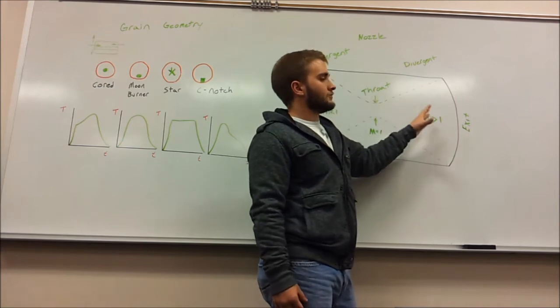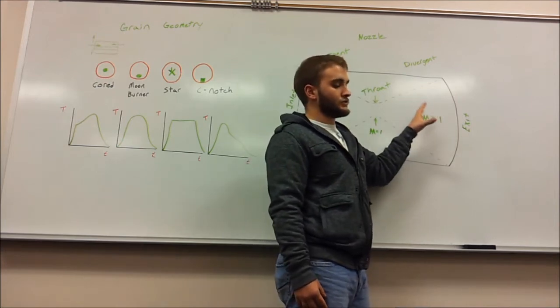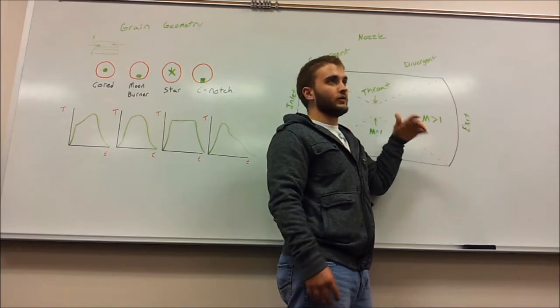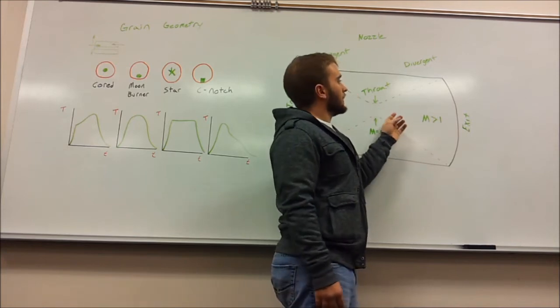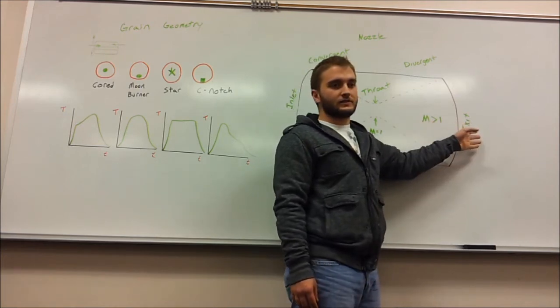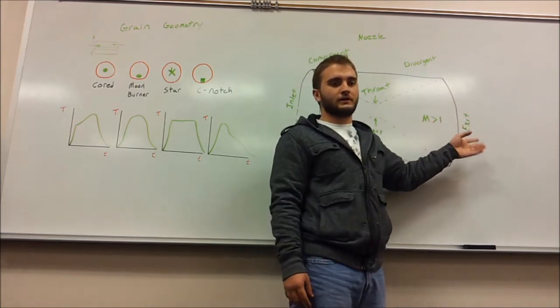Then you're going to have low pressure high velocity gases exiting propelling the rocket forward, or whichever direction. This would be the divergent section where all the gases exit out here being low pressure and high velocity.